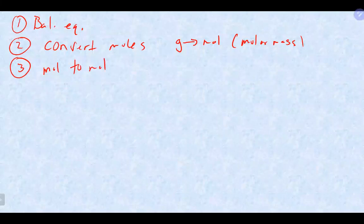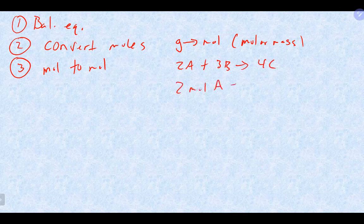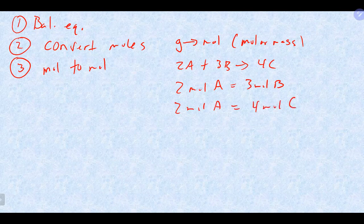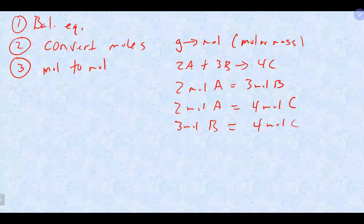The mole-to-mole relationship comes from the balanced equation — specifically the coefficients. So if we had a balanced equation like 2A + 3B → 4C, we could say there are 2 moles of A for 3 moles of B, 2 moles of A gives us 4 moles of C, and 3 moles of B gives us 4 moles of C. These are our stoichiometric equalities — nothing more than the coefficients from the balanced equation.